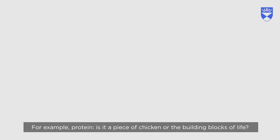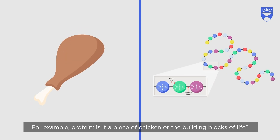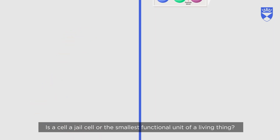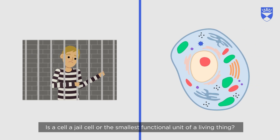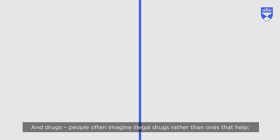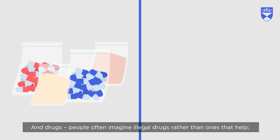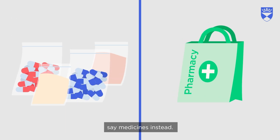For example, 'protein' — is it a piece of chicken or the building blocks of life? Is a 'cell' a jail cell or the smallest functional unit of a living thing? And 'drugs' — people often imagine illegal drugs rather than ones that help. Say 'medicines' instead.